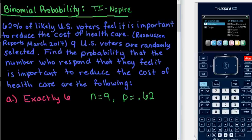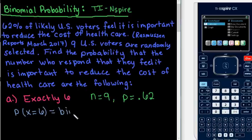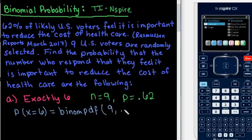Because we are looking for the probability of exactly 6 — that is, the probability that X equals 6 — we are going to use binomPDF. With this we need to know the number of trials, which is nine, the probability of success, 0.62, and how many times we are looking for, which is 6.